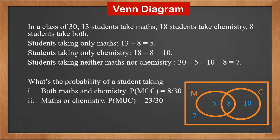Maths or chemistry. It's both M and C that is 5 plus 8 plus 10, which is 23. So probability of M union C is 23 over 30.